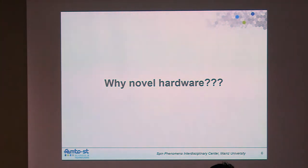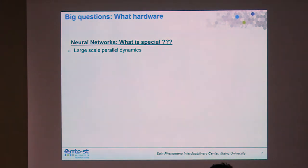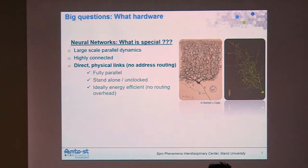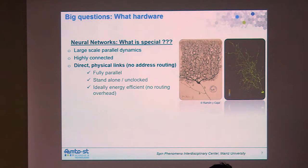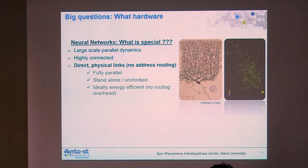Why implement these networks in hardware when you can simulate them on a desktop PC? The answer comes back to fundamental properties of the brain — human, animal, or mammalian. Brains are fully parallel, very high-dimensional, and hardware-connected. This is fundamentally different from our current computation and simulation machines, where communication between processor parts uses serial protocols, slowing the process and wasting energy.